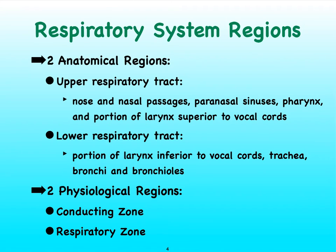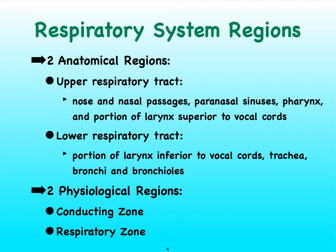There are two ways in which we can discuss the anatomy and physiology of the respiratory system. We can take the approach of anatomical regions: the upper respiratory tract starts with the nose, includes the paranasal sinuses, and goes down to the superior portion of the larynx. The lower respiratory tract then picks up with the remainder of the larynx and goes all the way down to the bronchioles.